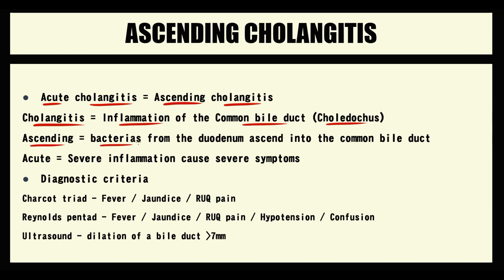Ascending tells us that bacteria from the duodenum can ascend into the common bile duct where they cause inflammation. Acute tells us that it's a very dangerous condition that causes very potent inflammation.